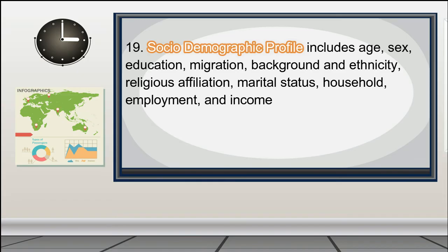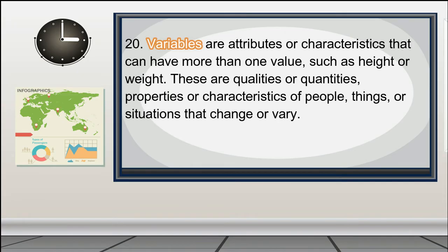marital status, household, employment, and income. 20. Variables — attributes or characteristics that can have more than one value such as height or weight. These are qualities or quantities, properties or characteristics of people, things, or situations that change or vary. There are two types of variables: independent variable and dependent variable.